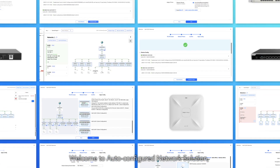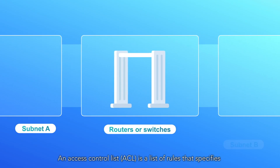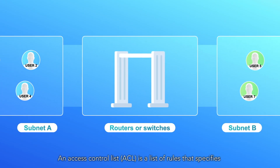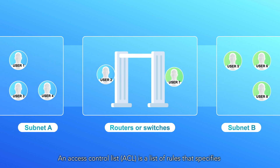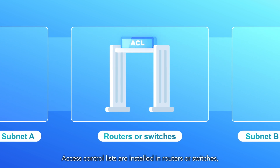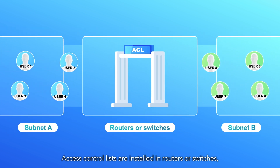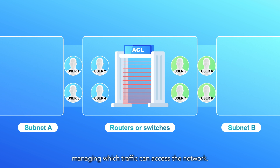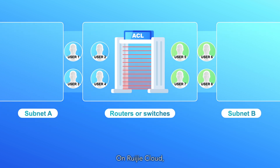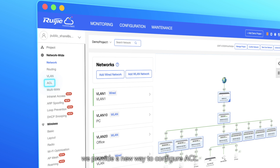Welcome to Auto-Configured Network Solution, a world-leading feature powered by Rejay Cloud. An Access Control List, or ACL, is a list of rules that specifies which users are granted or denied access to resources. Access Control Lists are installed in routers or switches, where they act as filters, managing which traffic can access the network. On Rejay Cloud, we provide a new way to configure ACL.